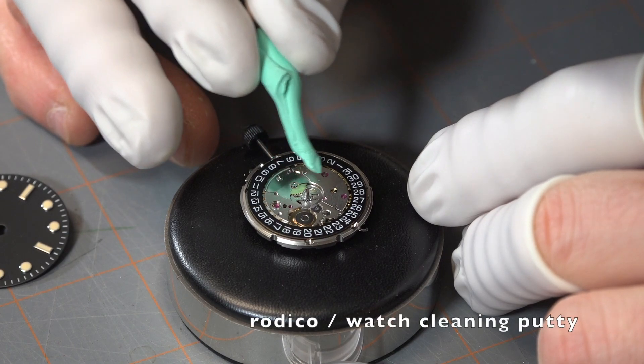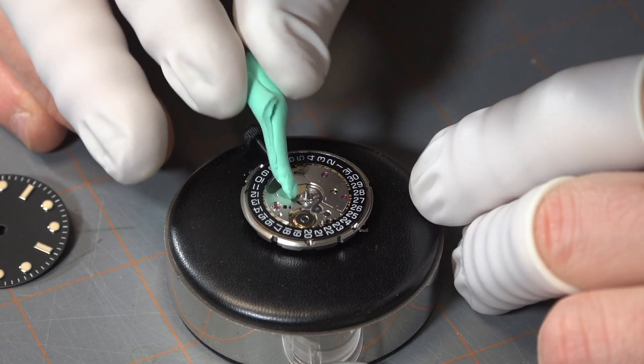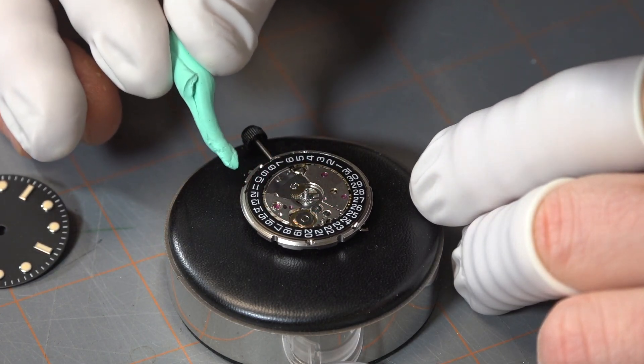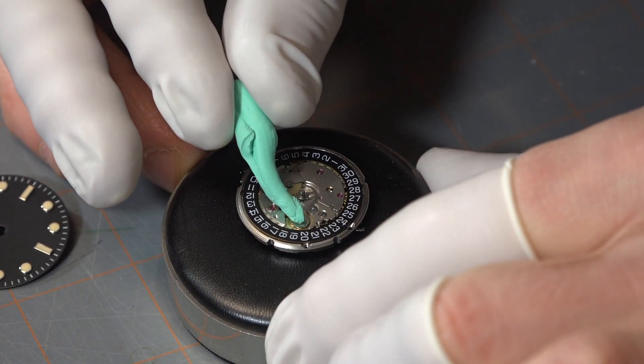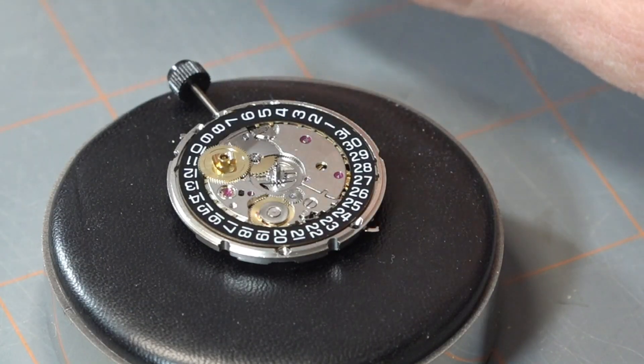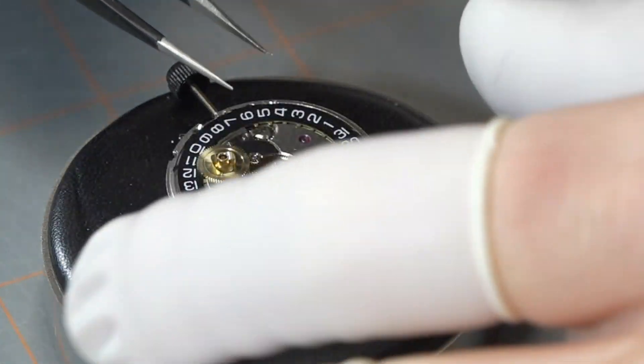Before I put the dial on, I used Rodico or a watch cleaning putty, whatever you want to call it, to make sure that the surface is really clean, because once I put the dial on I really don't want to take it back off because those dial feet clips are really hard to pry open.